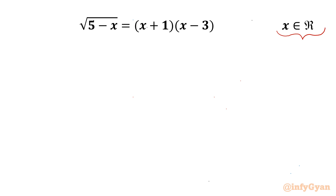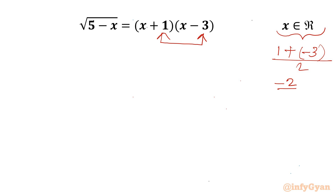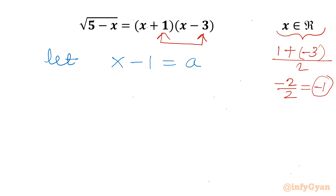Let us get started by considering the average of these two numbers. So (1 plus negative 3) divided by 2 will be negative 2 by 2, or negative 1. So I will use the substitution x minus 1 equal to a. So I can write x plus 1 as a plus 2, and x minus 3 as a minus 2.